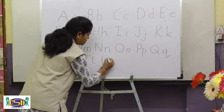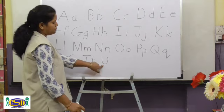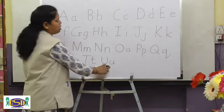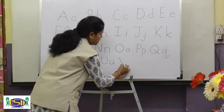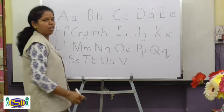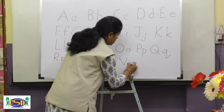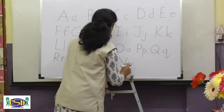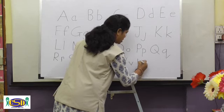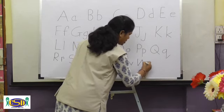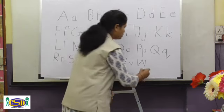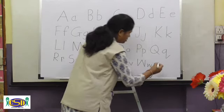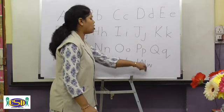Upward curve — capital U. Upward curve, upward curve, right hook — small u. Left slant line, right slant line — capital V. Left slant line, right slant line — small v. Standing line, right slant line, left slant line, standing line — capital W. Standing line, right slant line, right slant line, right slant line, standing line — small w.